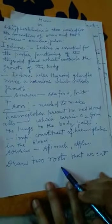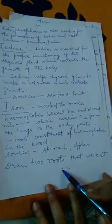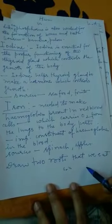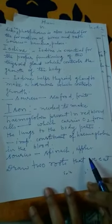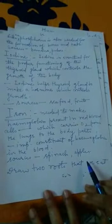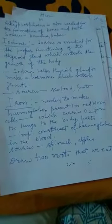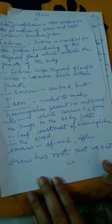Sources of iodine are all seafood and fruits. Iron is the next mineral required by our body because it is present in hemoglobin, which carries oxygen from the lungs to the body parts. Oxygen is inhaled by our lungs but must reach each and every cell for the oxidation of food to give us energy. Oxygen is carried by hemoglobin, of which iron is an important constituent.